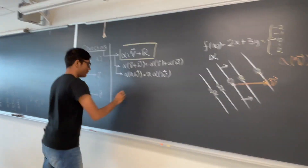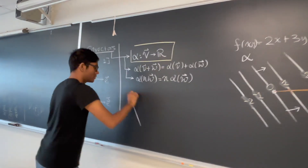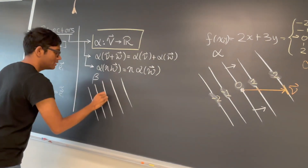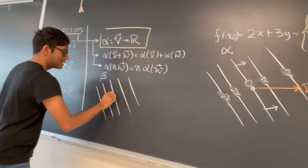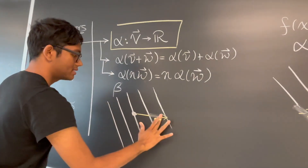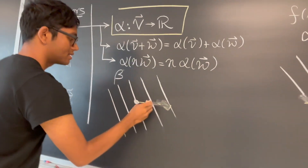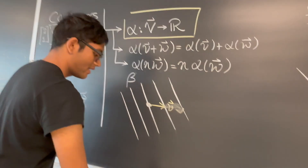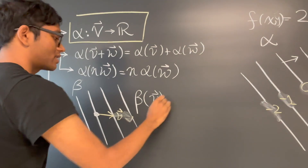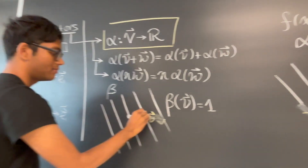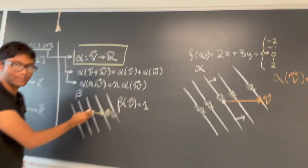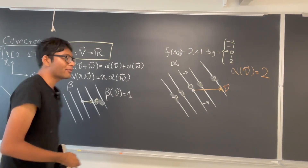Likewise, here's another covector field — I'll call it beta. Here's my vector v. If I apply the covector function beta to vector v, I'll just get 1 because the covector has only one contour that passes through vector v.